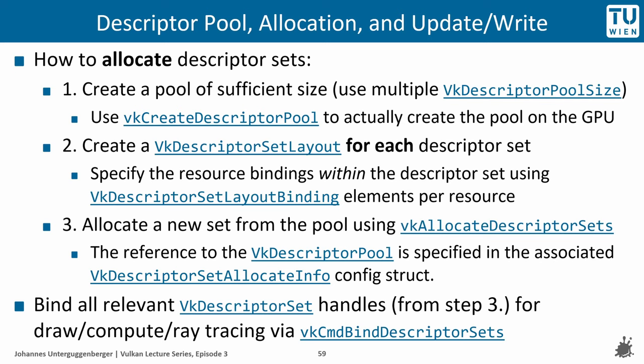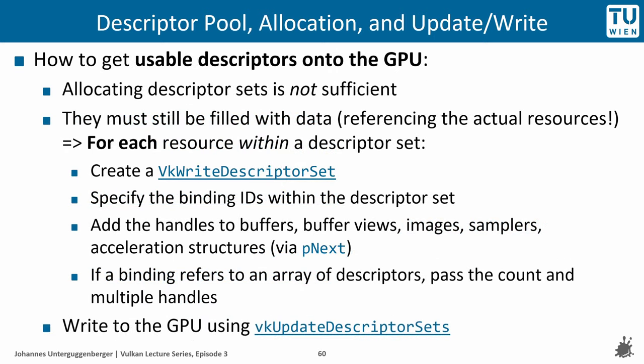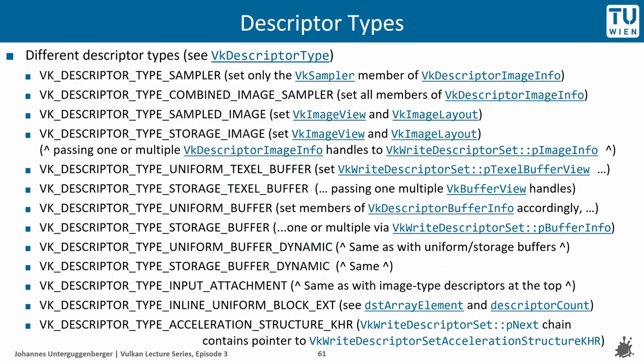Attention: only allocating a descriptor set is not sufficient, because so far only the descriptor set memory has been allocated and it does not contain any data yet. The allocated descriptor set must be populated with information about which resource it actually refers to, achieved with a call to vkUpdateDescriptorSets, passing as many VkWriteDescriptorSet entries as there are resource bindings within the descriptor set. Different parameters must be specified for buffers, images, samplers, acceleration structures, and their different usages.